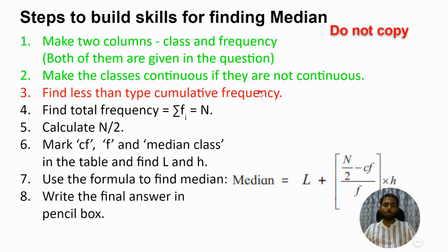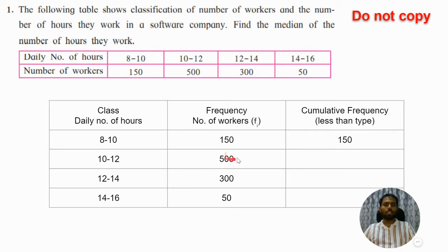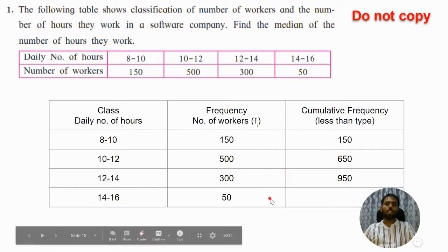Step three: find the less-than type cumulative frequency. Make a new column labeled 'less than type cumulative frequency.' Write the first frequency as it is — 150. Then add 150 to the next frequency: 500 plus 150 is 650. Then add 650 to the next: 650 plus 300 is 950. Finally 950 plus 50 is 1000.